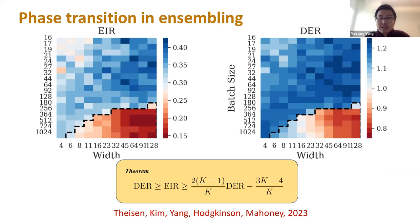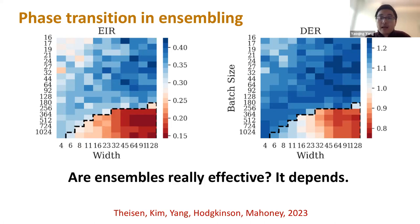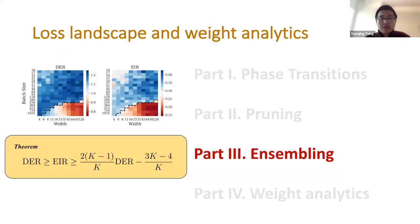Our main conclusions are: first, EIR and DER are tightly correlated — you can prove a theorem showing they are upper and lower bounds of each other. Second, both quantities have a phase transition at the interpolation threshold — on one side you have very high EIR, on the other relatively low EIR, with a big jump between regimes. So is ensemble really effective? The answer is: it depends on the phase of your problem.